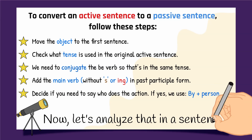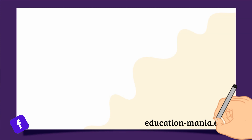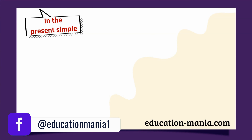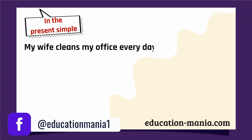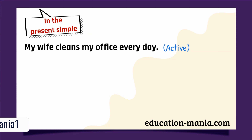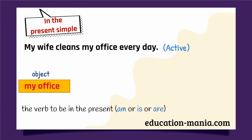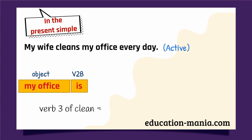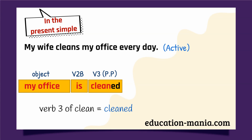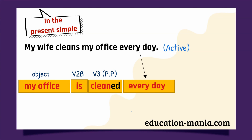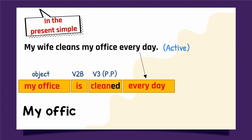Now let's analyze that in a sentence. In the Present Simple: 'My wife cleans my office every day.' The object is 'my office' — move it to the front. The verb to be in the present is am, is, or are. Verb 3 of 'clean' is 'cleaned'. Then add the complement 'every day'. Result: 'My office is cleaned every day.'